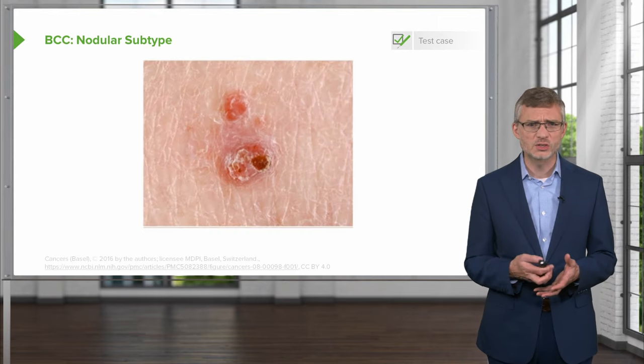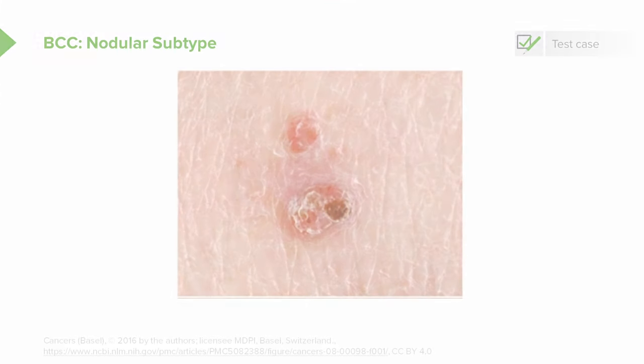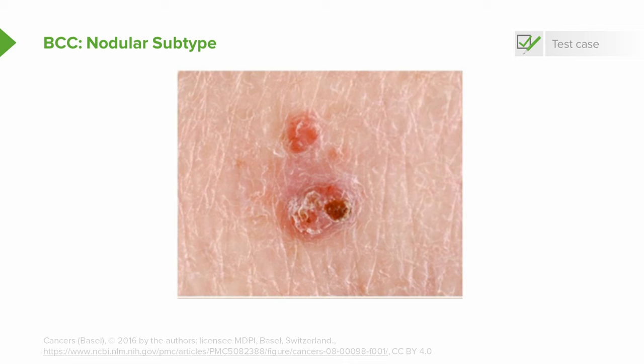The nodular subtype presents as a palpable, subdermal, indurated area with telangiectasias on the skin, and there may be an ulcerated area in the middle as well. The nodular and ulcerating subtypes are pretty similar to one another.